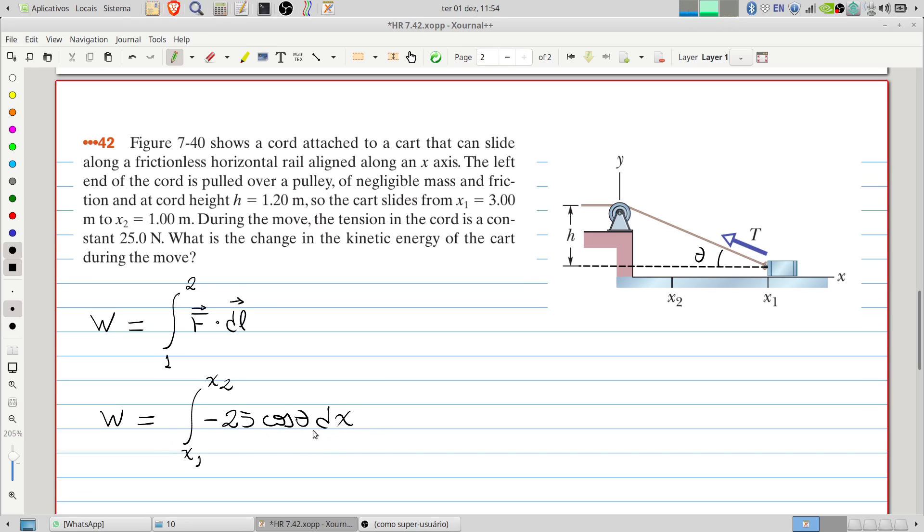Of course we must rewrite the cosine of theta using x. We can write cosine of theta equals the side adjacent to the angle, that is x, divided by the square root of x squared plus h squared.